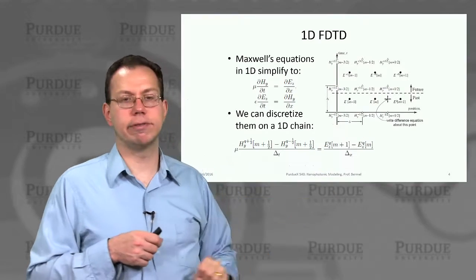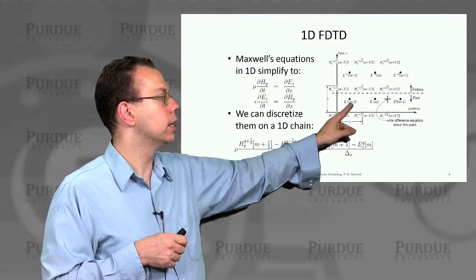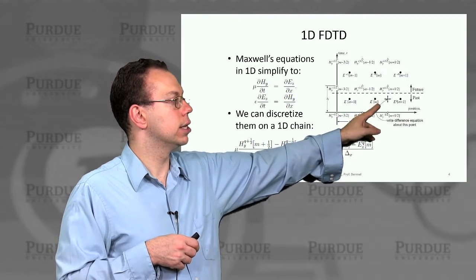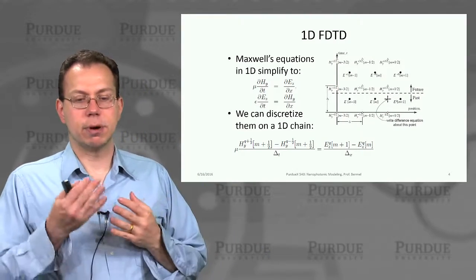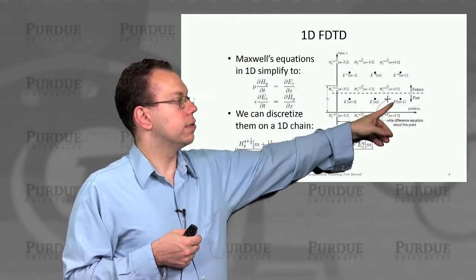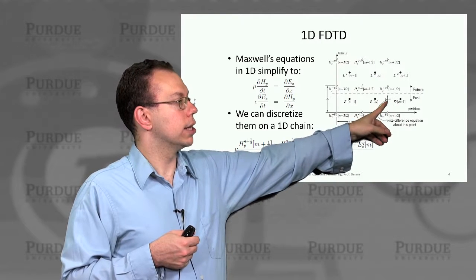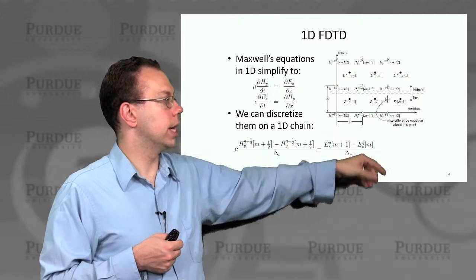And then you have the H fields also along the position axis, but they're offset by half a grid point, okay? So then that's why this is at m minus 1, this m minus 1 half, this is m plus 1 half, this is m plus 1, but then as you propagate through time, then you write different equations at each of these intermediate points, okay?